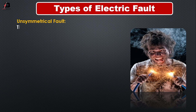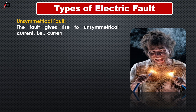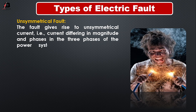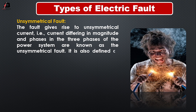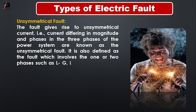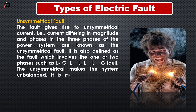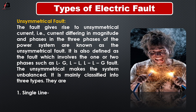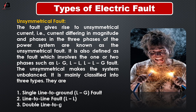Unsymmetrical fault. The fault gives rise to unsymmetrical current — for example, current different in magnitude and phase in the three phases of the power system — is known as the unsymmetrical fault. It is also defined as the fault which involves one or two phases such as line-to-ground, line-to-line, and line-to-line and ground fault. The unsymmetrical fault makes the system unbalanced and is mainly classified into three types: number one, single line-to-ground; number two, line-to-line fault; and number three, double line-to-ground fault.